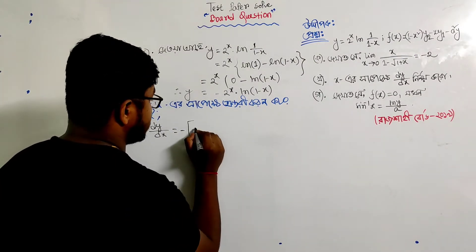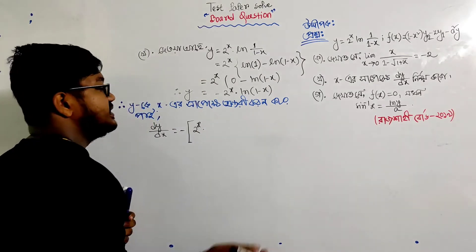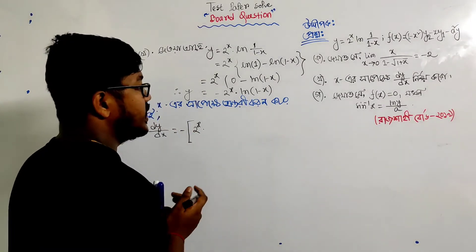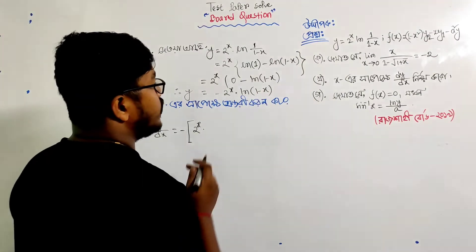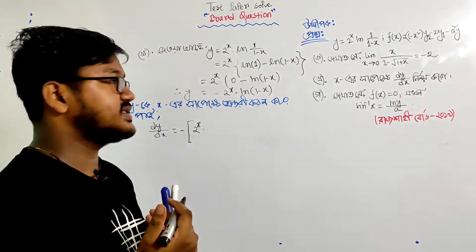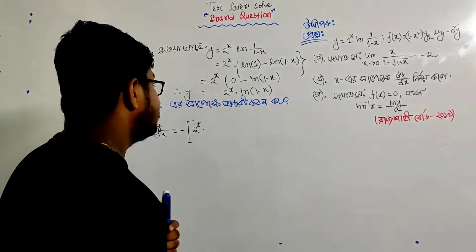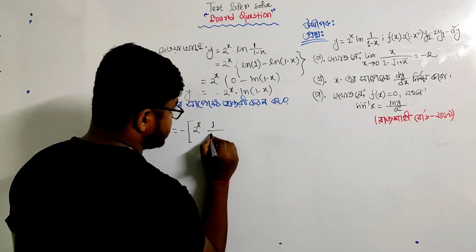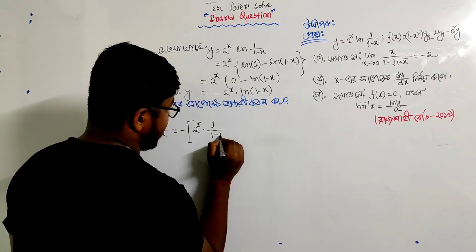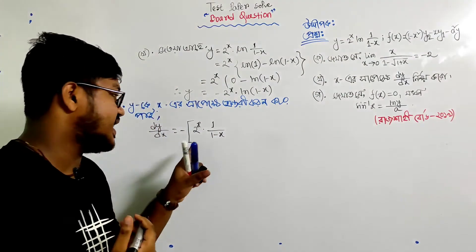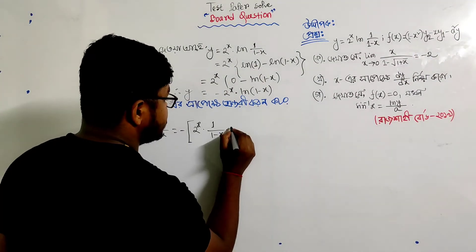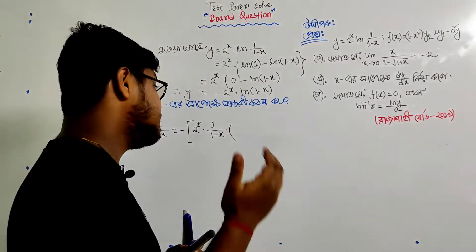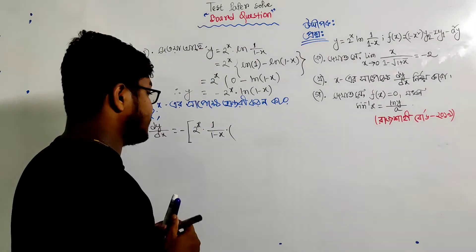The first function is 2 to the power x and the second function is ln of 1 minus x. The derivative of ln of 1 minus x is 1 divided by 1 minus x, multiplied by minus 1.